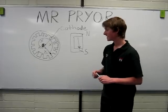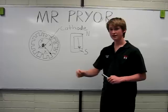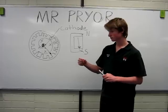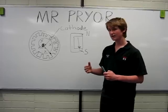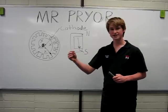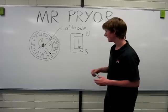As the electron passes the anode vein, the charge dissipates, and the electron charges the next anode vein, creating an alternating current.